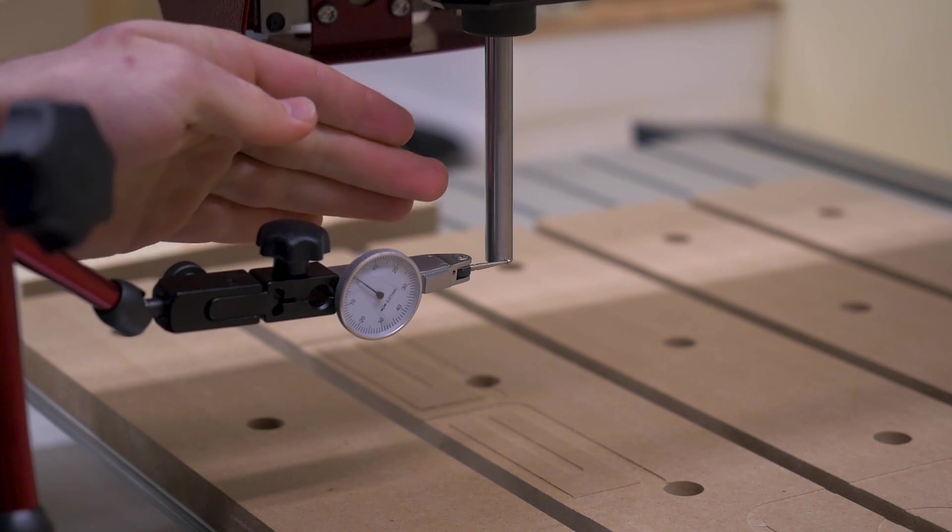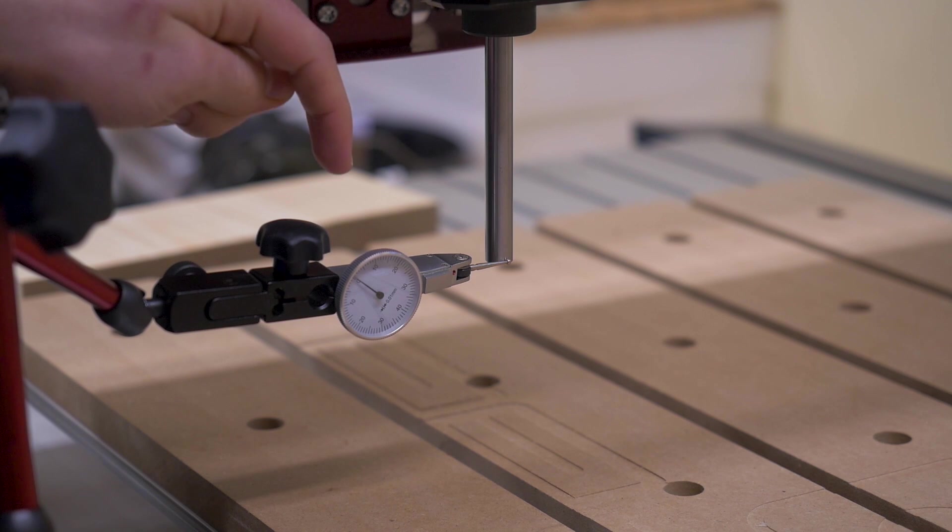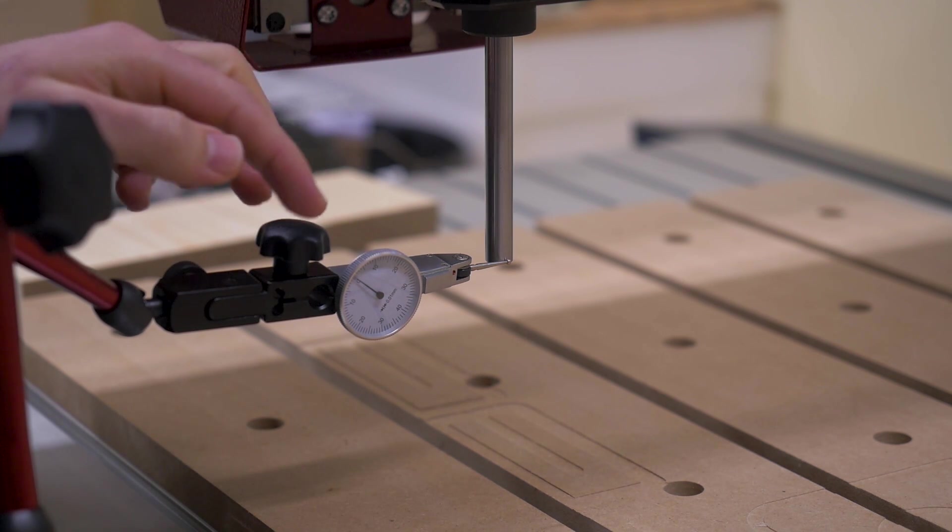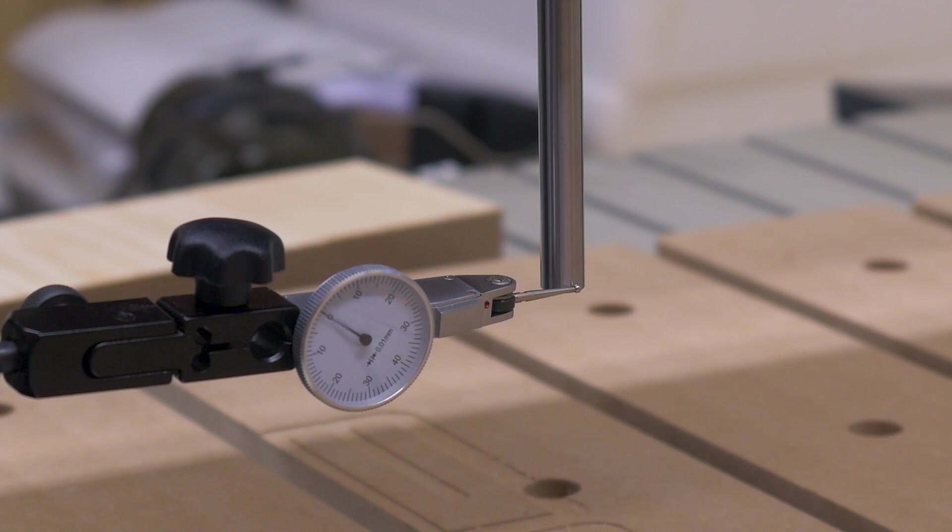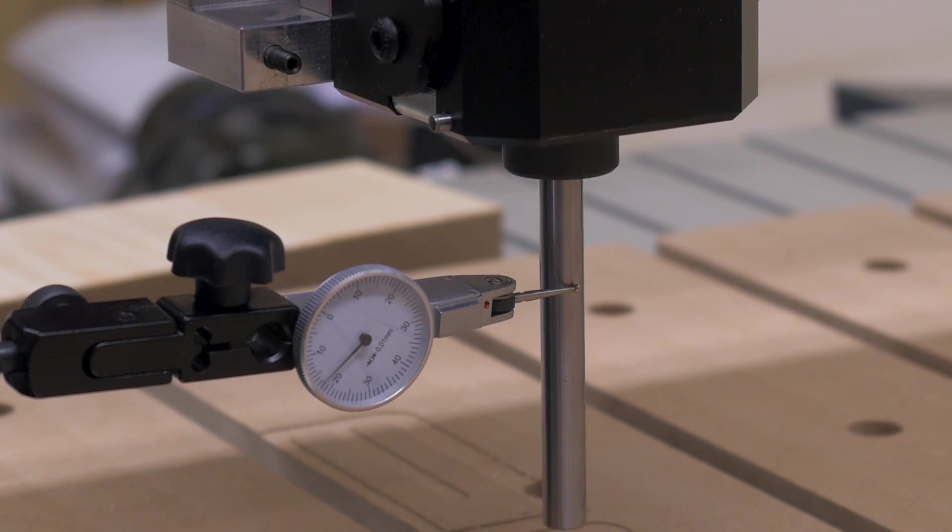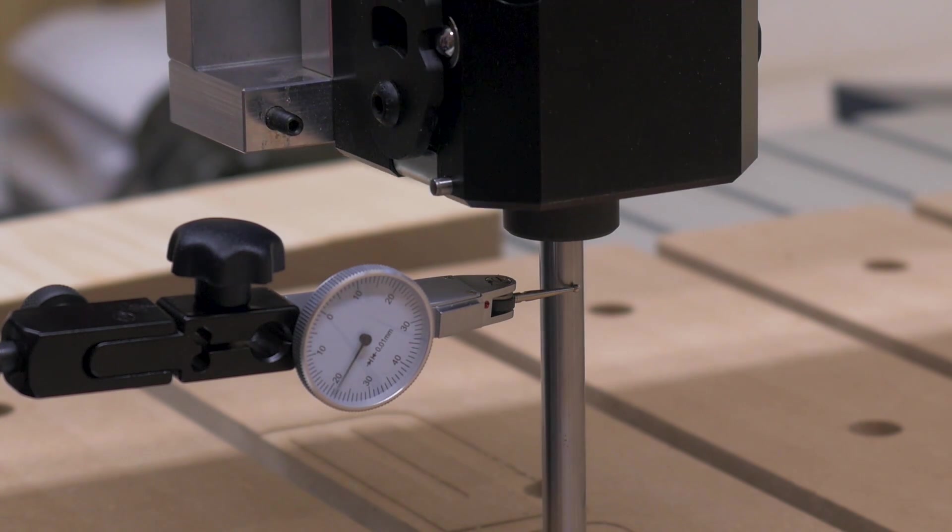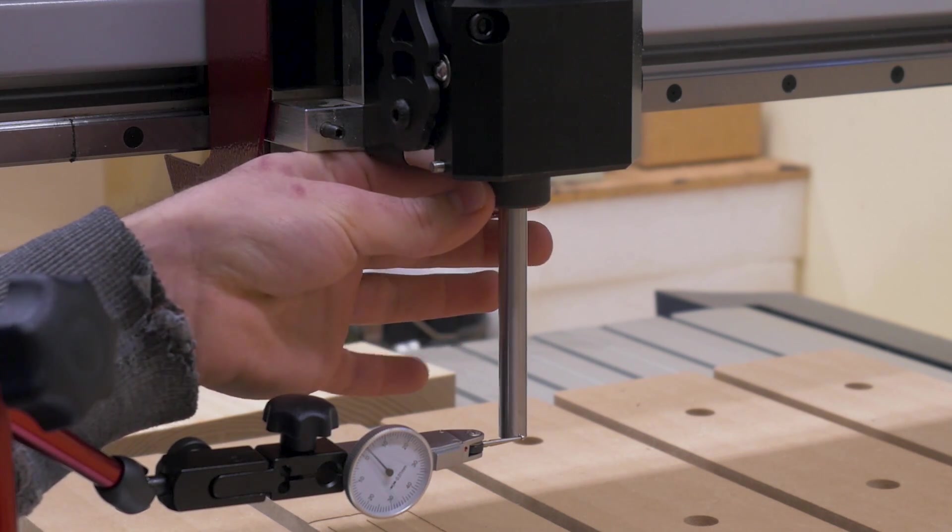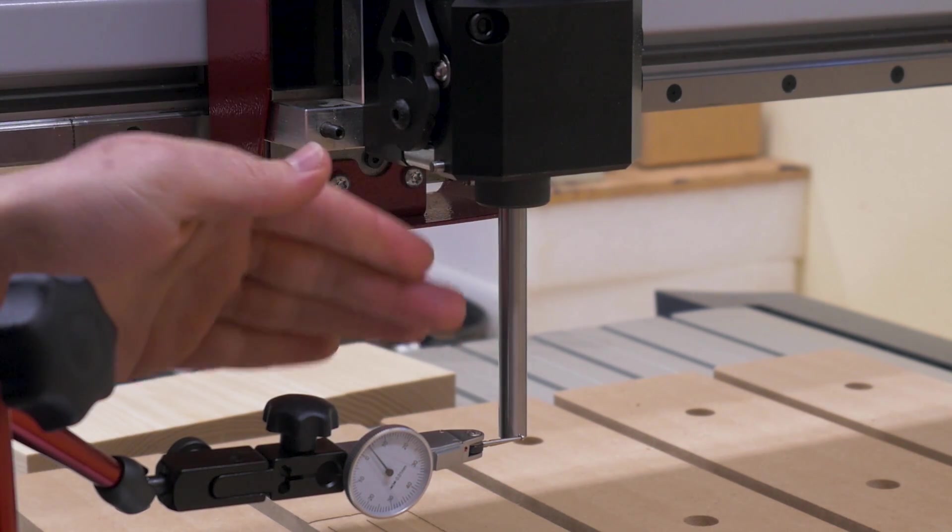I've now zeroed a dial indicator to that and will now move the spindle down and if it's perfectly aligned the dial will stay in place and if not it will move in one or the other direction. I now turn the spindle 90 degrees and repeat that and that way I can average out the spindle runout.